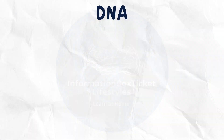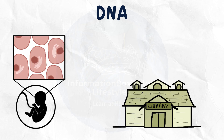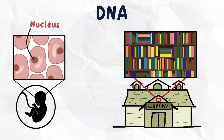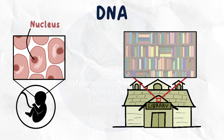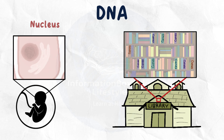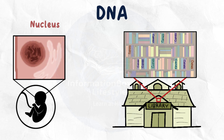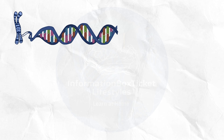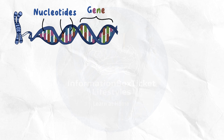Our DNA is like a library housed in the nucleus of our cells, containing hundreds of volumes. Some of these books, known as genes, are particularly significant since they contain the blueprints for all of the proteins present in the cell. On a molecular level, DNA is made up of two strands of nucleotides, and each gene is just a section of that nucleotide sequence.